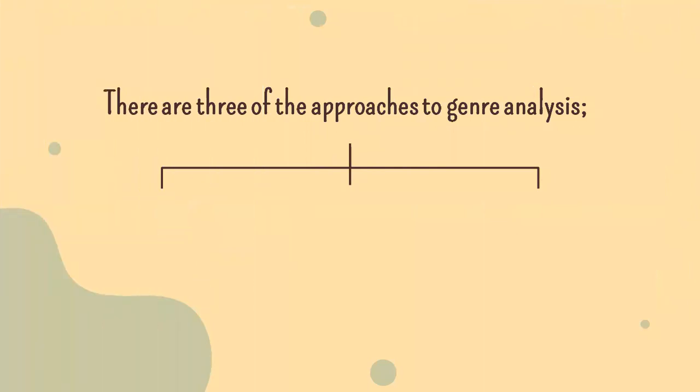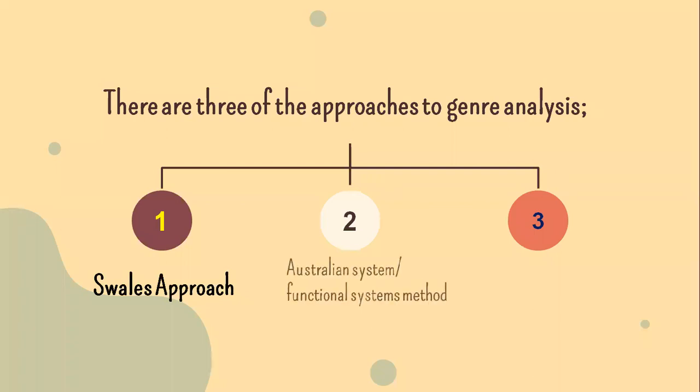There are three approaches to genre analysis. The first is Swales' approach. This approach focuses on the moves and steps analysis within a genre. The second is Australian systemic functional method. This approach focuses on the forms and functions of language. And the last is new rhetoric. This approach focuses on the intention and effect of language.